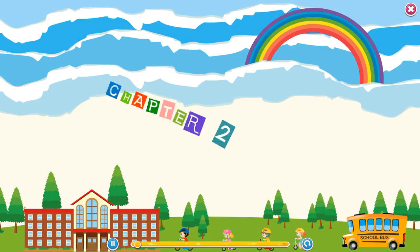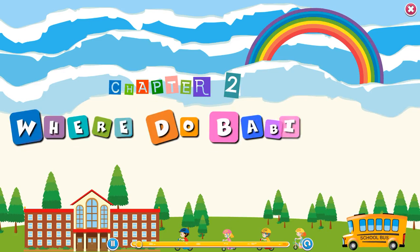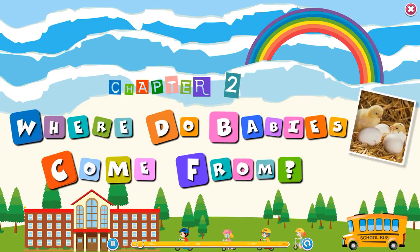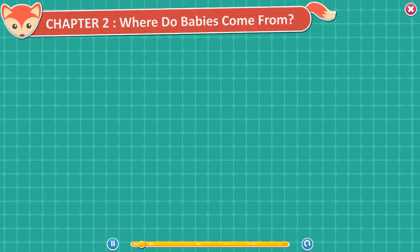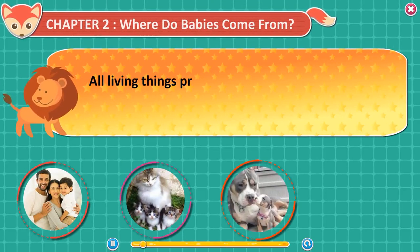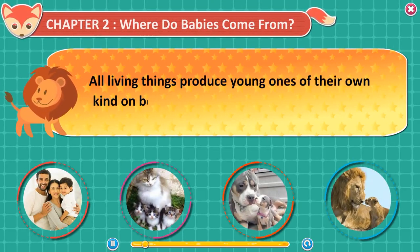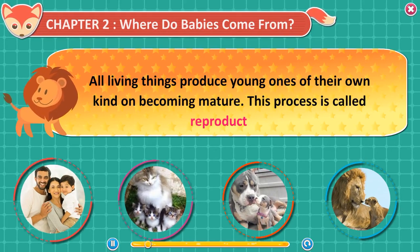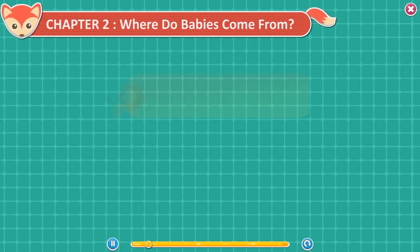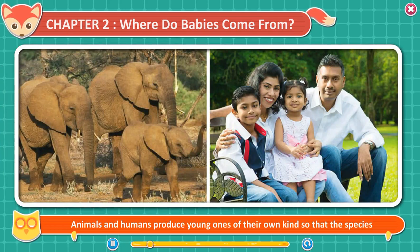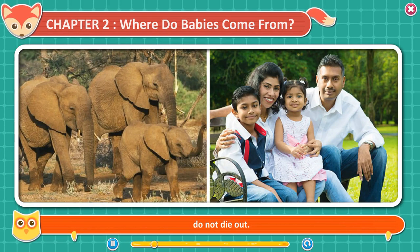Chapter 2: Where do babies come from? All living things produce young ones of their own kind on becoming mature. This process is called reproduction. Animals and humans produce young ones of their own kind so that the species do not die out. Some animals lay eggs.